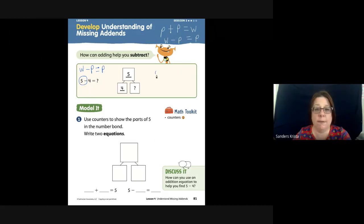So if I have a whole of five, I could draw five. One, two, three, four, five. That's my whole. Here's my whole number bond. My part line. So here's a part, and here is another part.